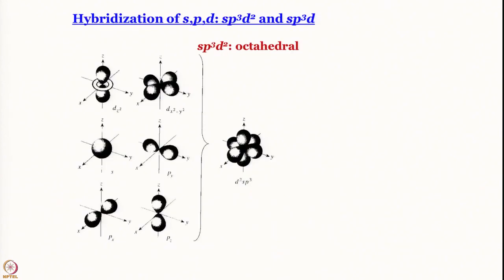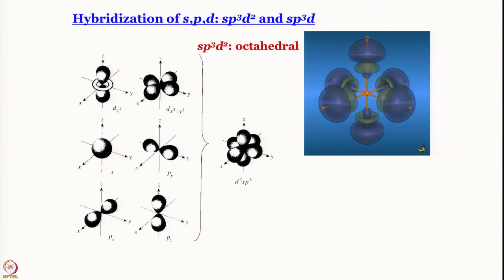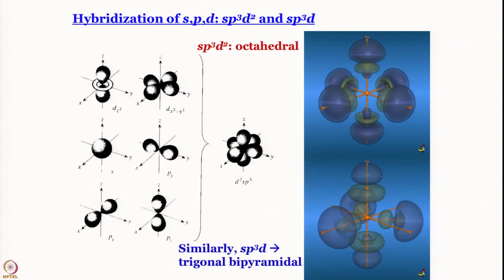Finally, sp orbitals are not the only ones that participate in hybridization. For octahedral geometry, sp³d² hybridization is used; for trigonal bipyramidal geometry, sp³d is used. The coefficients for all these cases can be worked out in exactly the same way as we have done for sp, sp², sp³, sp⁴, and sp²·³ hybrid orbitals.